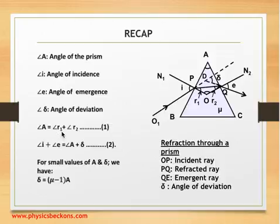We have studied that angle A equals the sum of angles r₁ and r₂. For a prism, angle i plus angle e (the sum of the angle of incidence and angle of emergence) equals the sum of the angle of the prism and the deviation. Moreover, for small values of angle A and angle i, we have deviation δ equal to (μ - 1) times A.